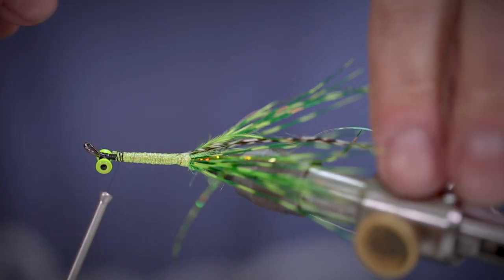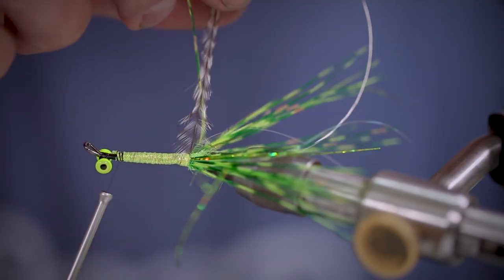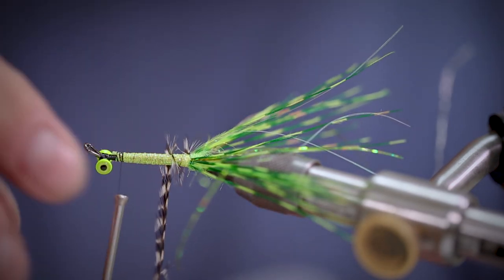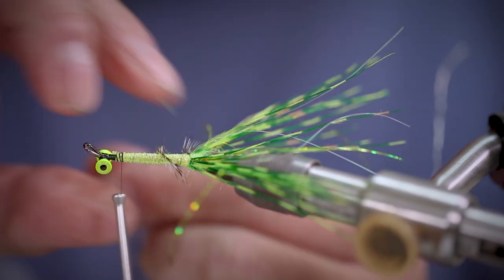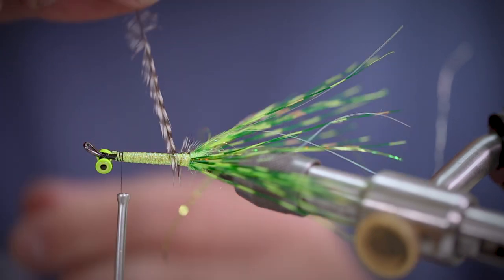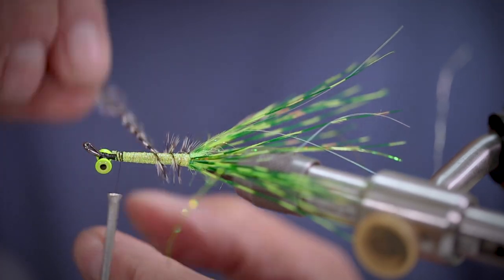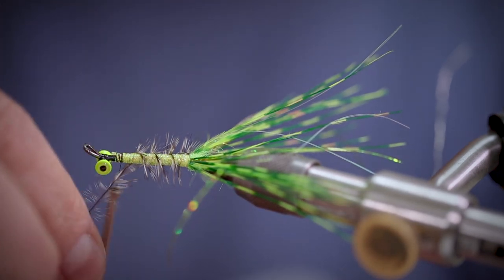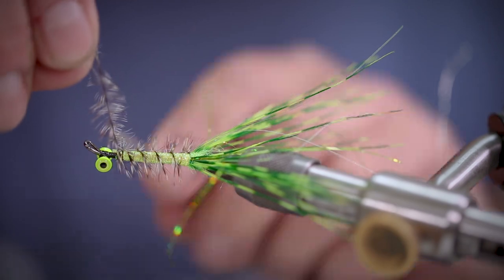Next, we're going to take our hackle and wind it around the body. You see, the length of the fibres are all the same. Tie it off and trim away the waste.